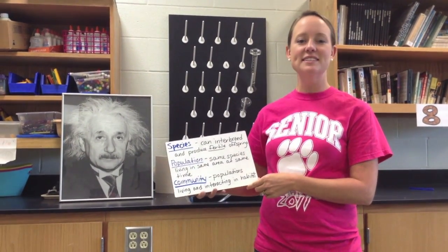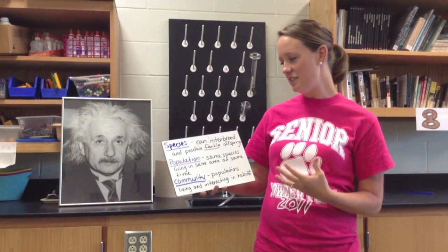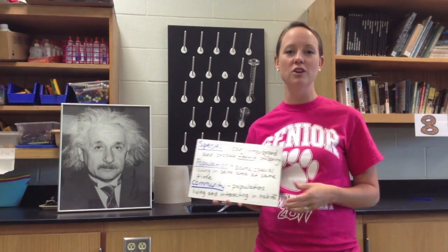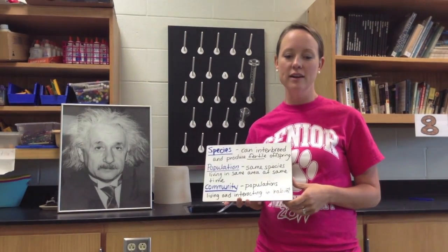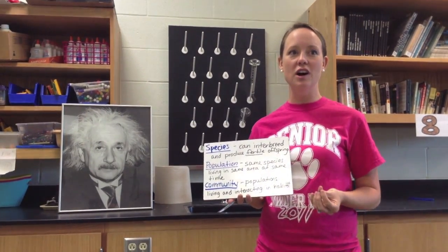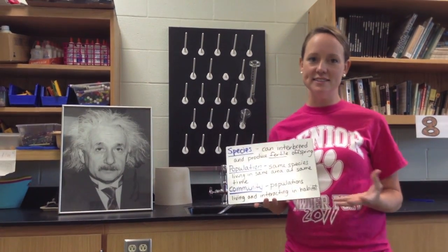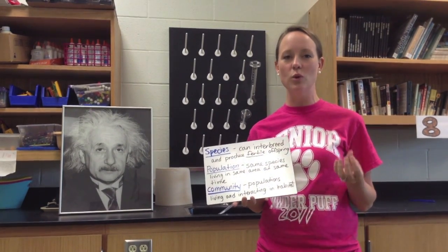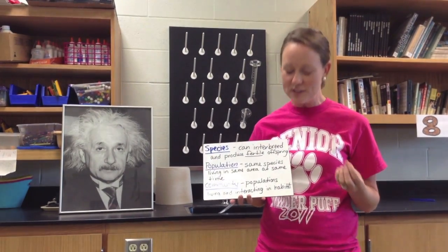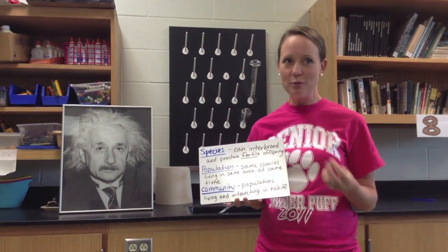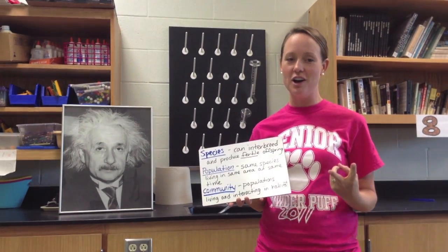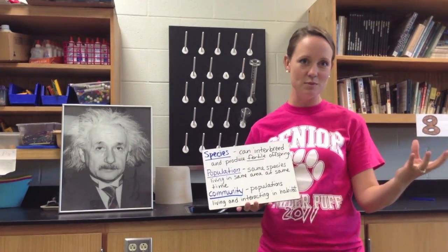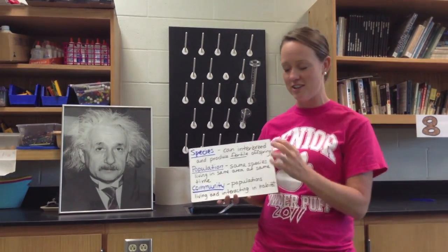A species is classified as individuals that can interbreed and produce fertile offspring. If they cannot produce fertile offspring, they're not considered a species. A common example would be a horse and a donkey, which can produce a mule, but two mules cannot produce fertile offspring, so a mule is not a species. A horse is a species and a donkey is a species.